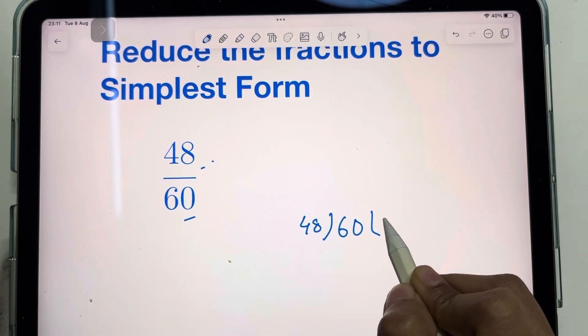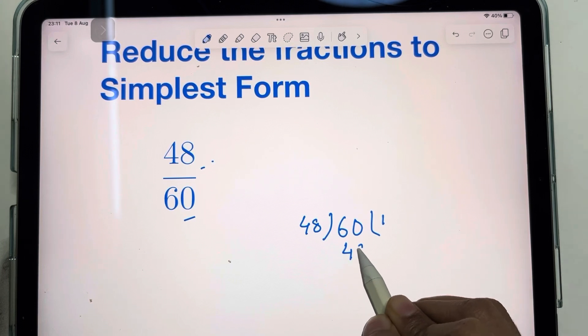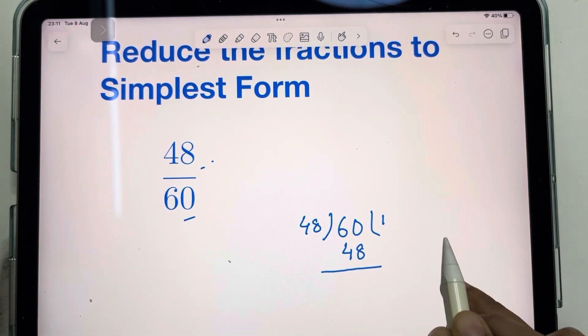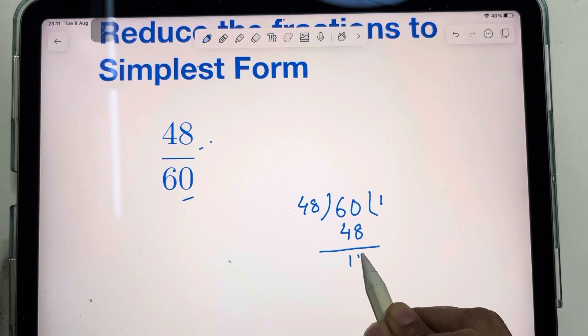So 48 times 1 is 48, and we will do it until the remainder is 0. Subtract 60 minus 48 is 12.